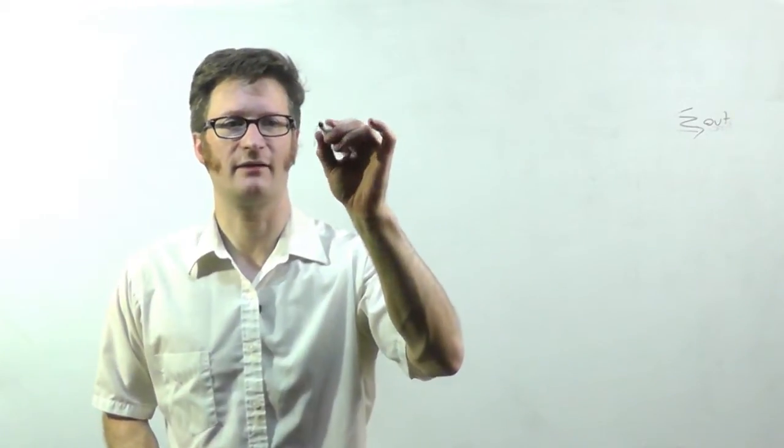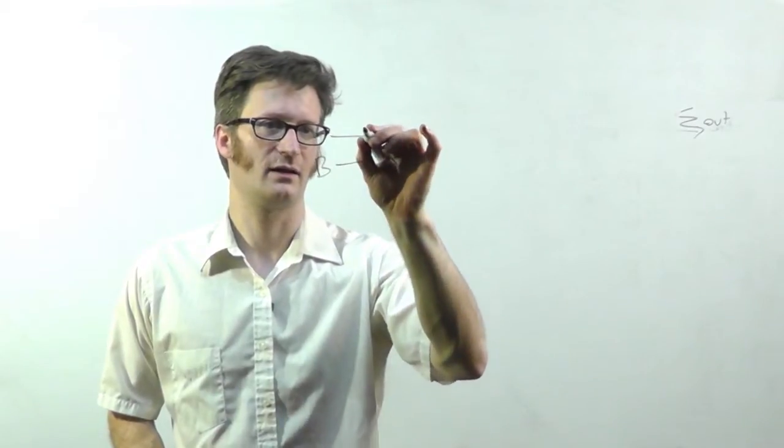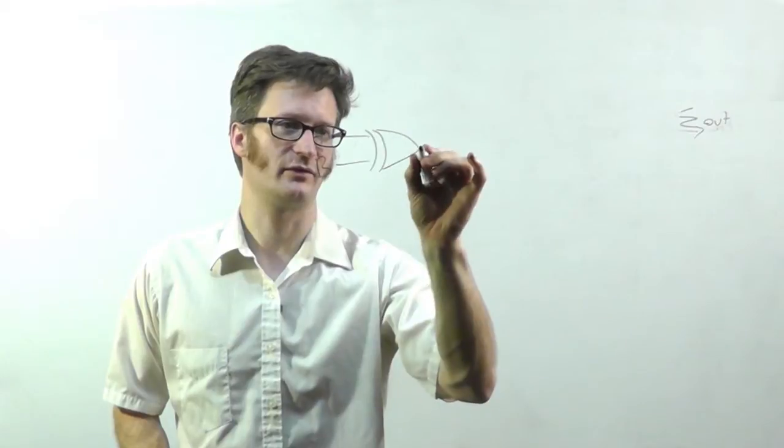So let's say I have my serial lines A and B. They're going to come in and go to an exclusive NOR gate.